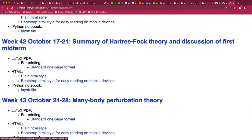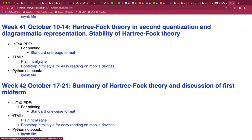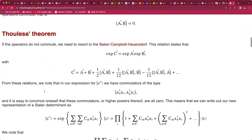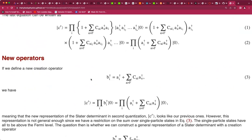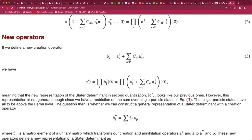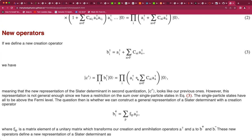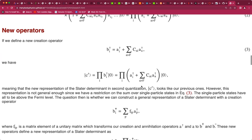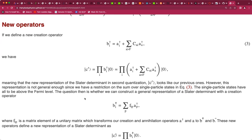Thouless' theorem says that we can approximate any one of these Slater determinants in terms of a general one-particle one-hole excitation defined by the new operator b_i. What we need to prove is that this is general enough to define a basic Slater determinant. The key ingredient is showing that this new operator b, defined as a unitarily transformed version of the original creation-annihilation operators, produces states that are equivalent to c-prime when the overlap with the reference state is non-zero.